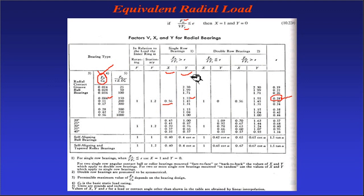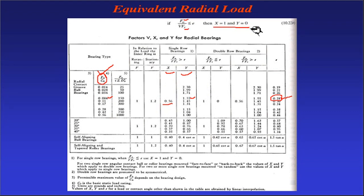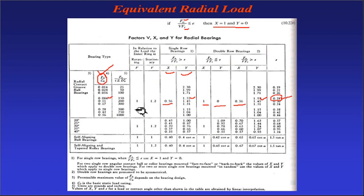If FA/(V×FR) is less than or equal to E, you follow a different set of X and Y values. For single row bearings when FA/(V×FR) ≤ E, X = 1 and Y = 0. For double row bearings, different X and Y values apply. When FA/(V×FR) > E for double row bearings, X = 0.56 and Y = 1.55 (read from the horizontal row). The rotation factor V is 1 for inner race rotating and 1.2 for outer race rotating. Refer to this table to find X, V, and Y.